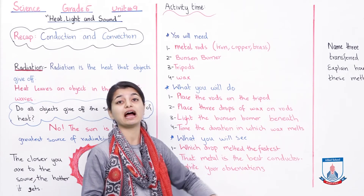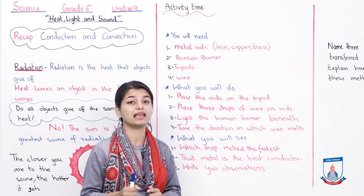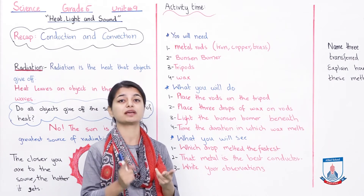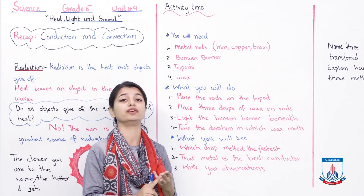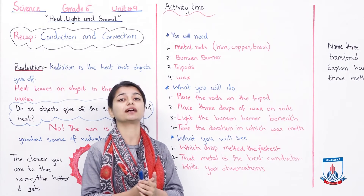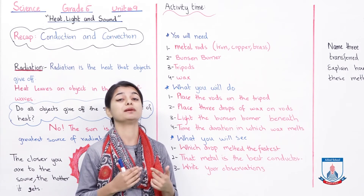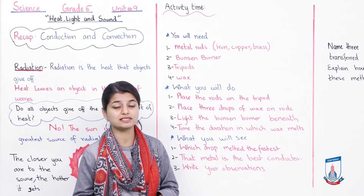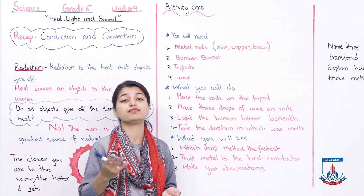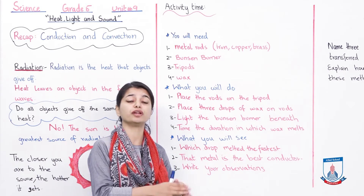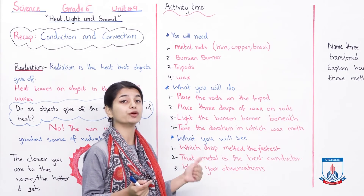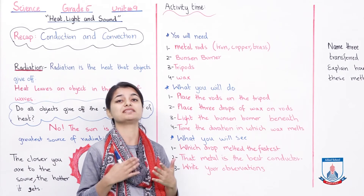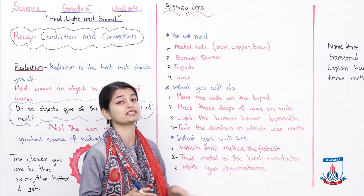Write your observations — record the times for all three rods, observe which drop melted first, then second, then third. In that manner you will be able to differentiate which metal is the best conductor and which is the worst among the three. That is the purpose of this experiment — to help you understand how conduction works and how different materials conduct at completely different speeds. Some are good conductors, some are poor conductors. I hope you will conduct this experiment with your teacher under supervision. You can also search for videos about it — it's not a difficult experiment.